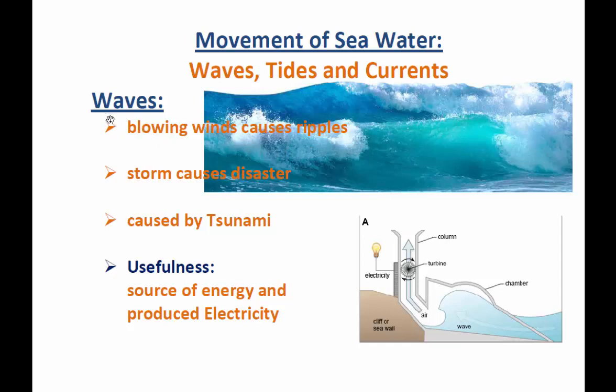First, let us see how waves are caused. Waves are usually caused by the blowing of winds — when the wind blows, it causes ripples, meaning a zigzag pattern on the surface of the sea. Waves are also caused by storms, which can be very disastrous, such as cyclones. Waves are also caused by tsunamis.